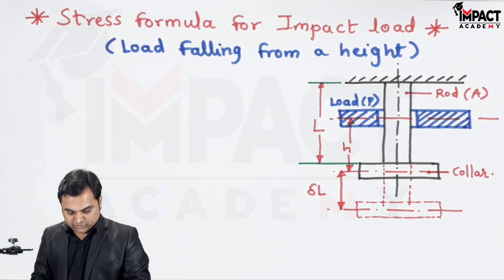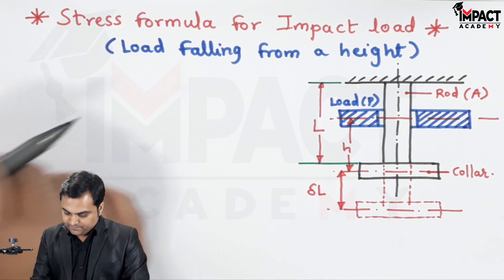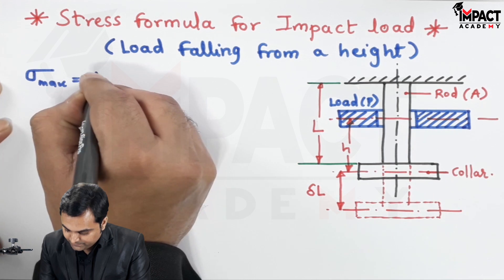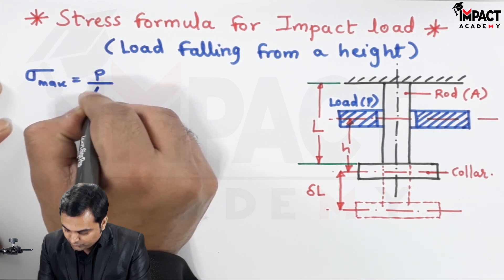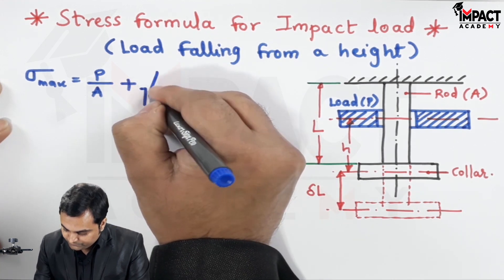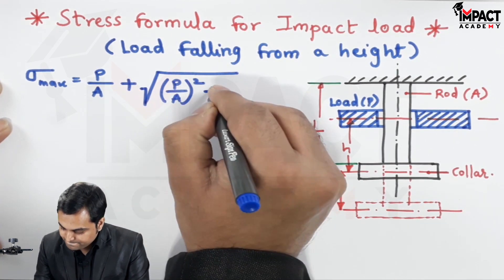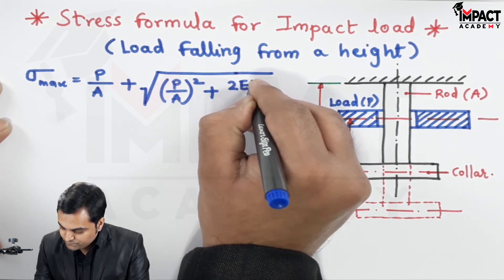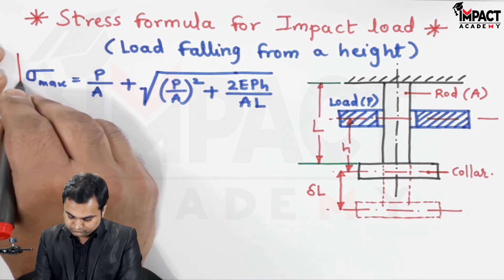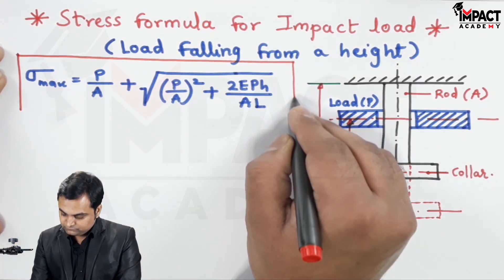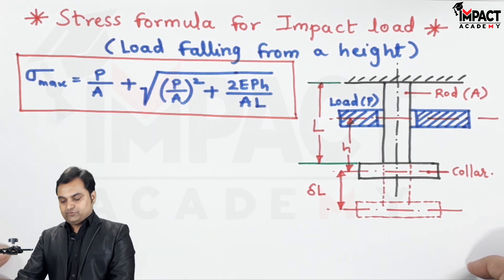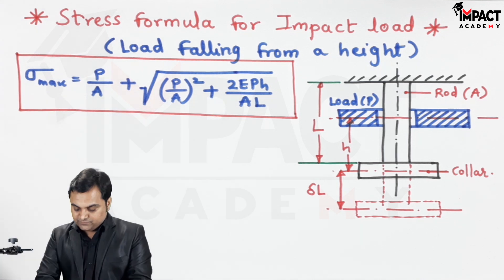The formula for stress in case of impact load is given by the maximum stress, which will be P upon A plus the square root of — so this is the formula of the maximum instantaneous stress because of impact load.